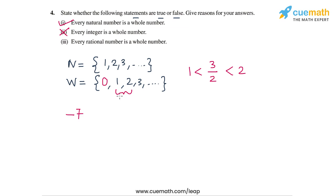But every whole number is surely a rational number. So the statement 'every rational number is a whole number' is false. In summary, the first statement is true and the remaining two statements are false in question 4.